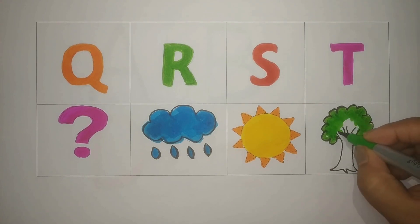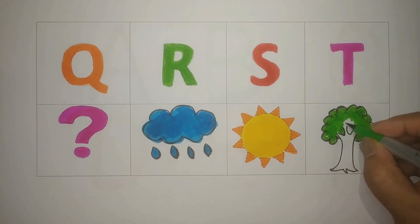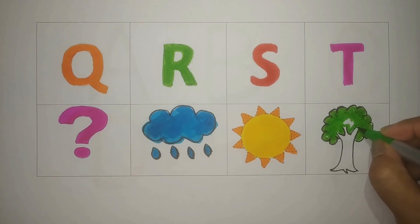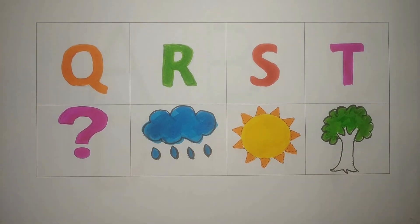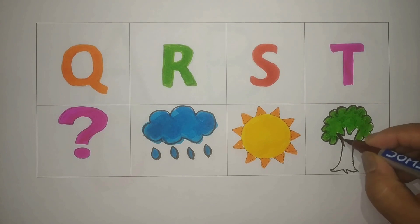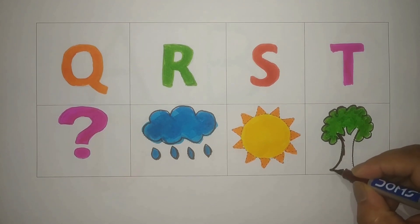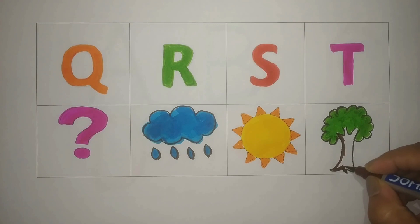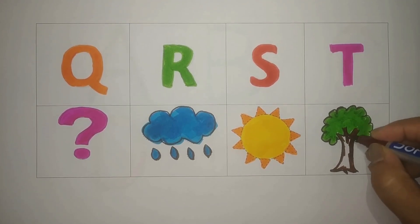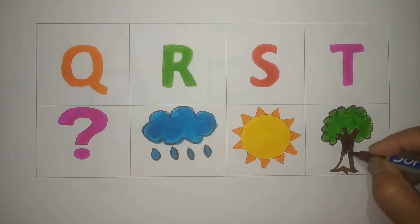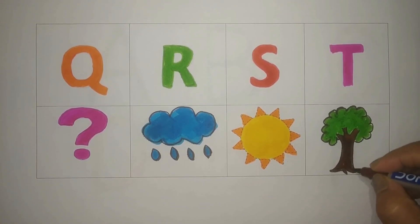T for tree, green color. T for tree, green color. Brown color. T for tree, brown color.